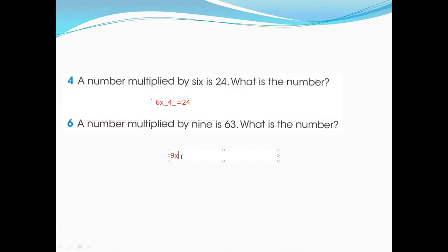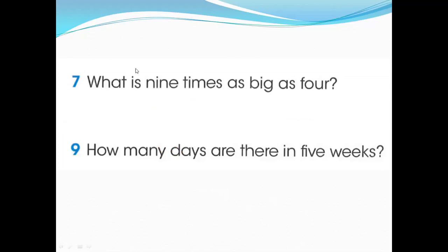Nine sevens are 63, so the answer is seven. I also shared the multiplication tables page in the WhatsApp group — please memorize the table. If you don't know the table, keep a table chart in front of you so you can easily find the answer. A number multiplied by nine gives 63, so the number is seven.